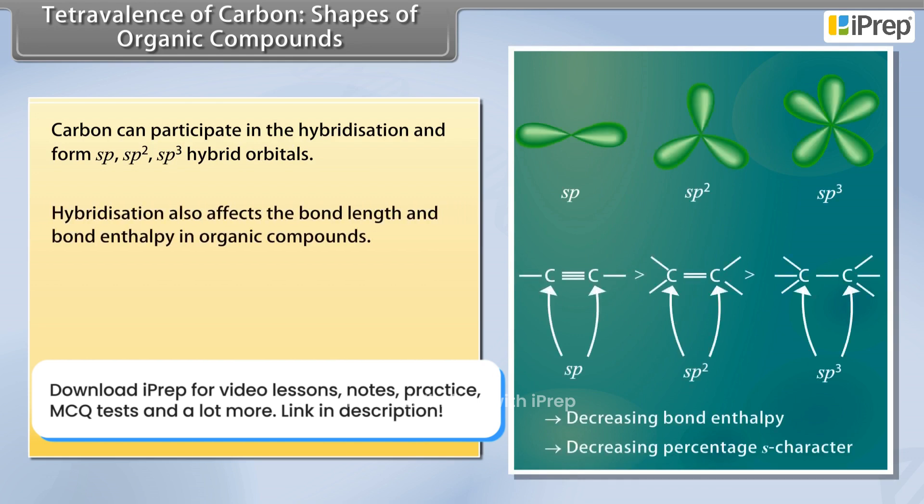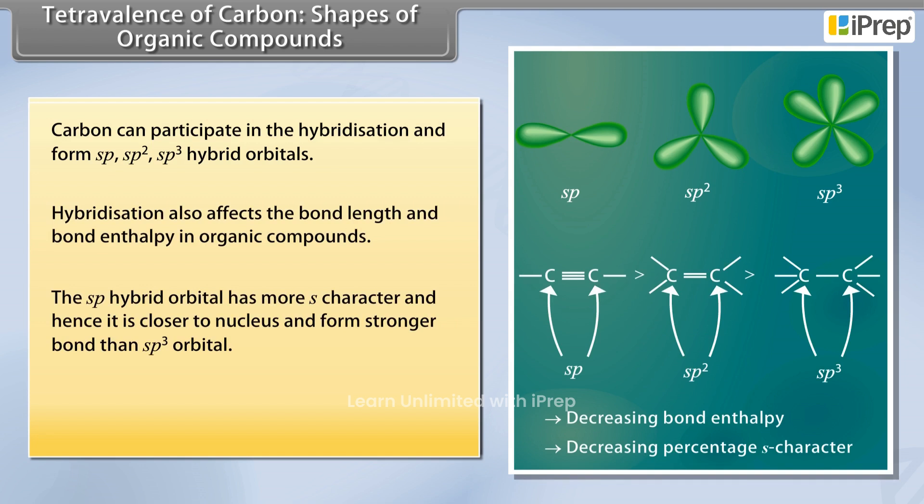Hybridization also affects the bond length and bond enthalpy in organic compounds. The sp hybrid orbital has more s character and hence it is closer to nucleus and forms stronger bond than sp3 orbital.